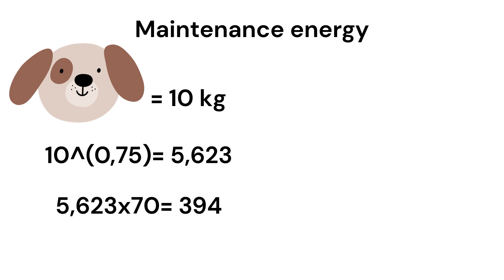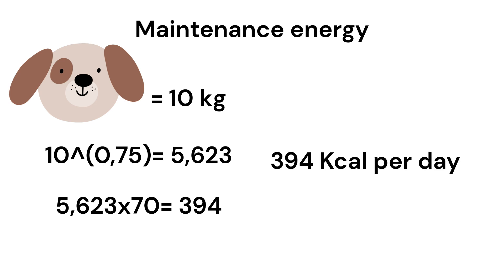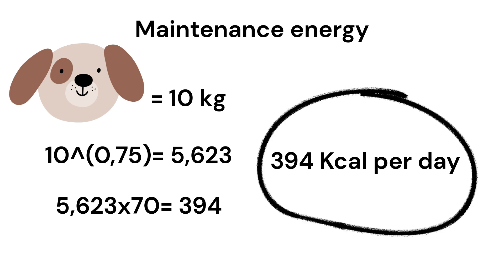We round that up to 394. So what we calculated here is how many calories this dog needs per day — a 10 kilogram dog needs 394 calories per day to function correctly and maintain its weight.